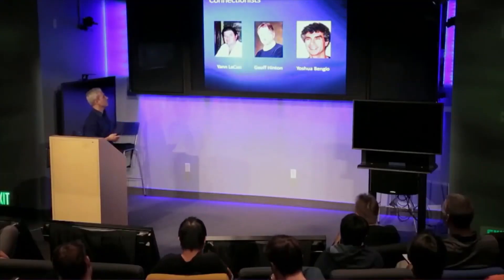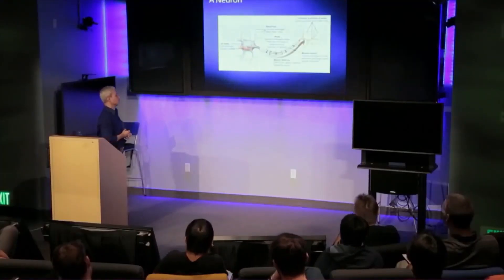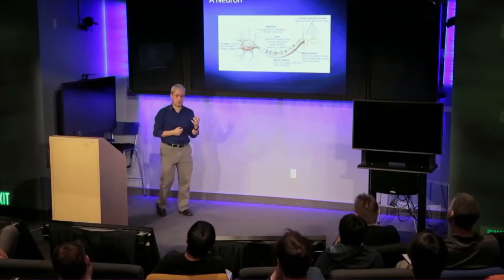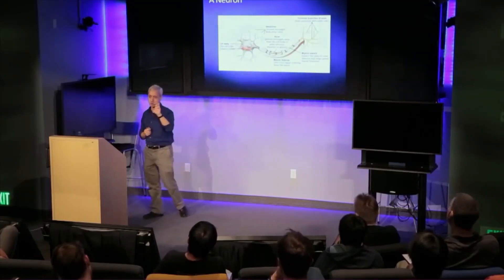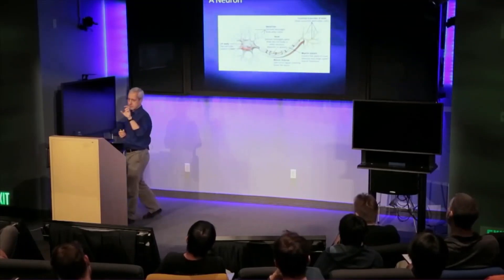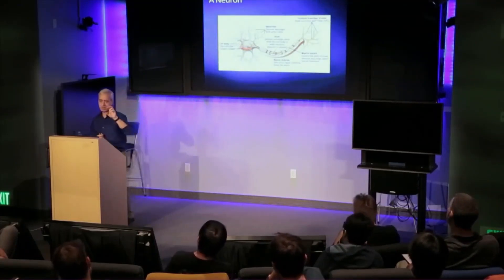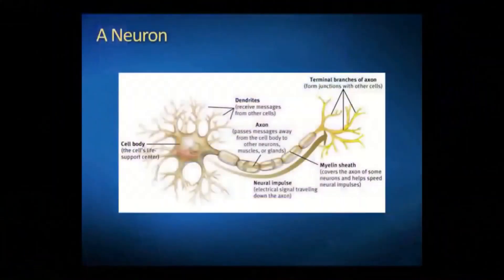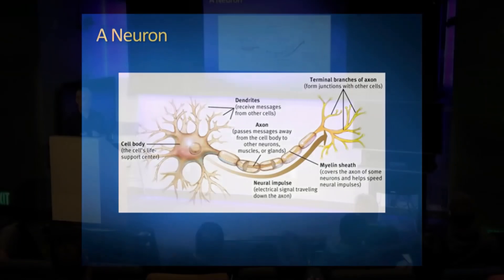So how does it all work? What we're going to do is build a model — a mathematical model — of how a single neuron works. We're going to make it as simple as we can, provided it's enough to learn and to do the inferences that we need it to do.